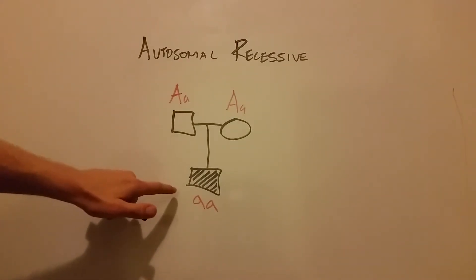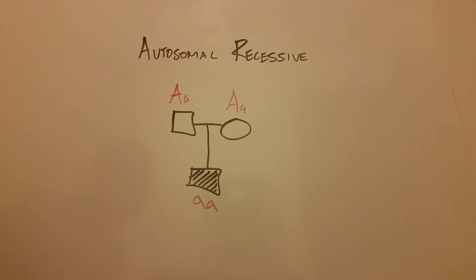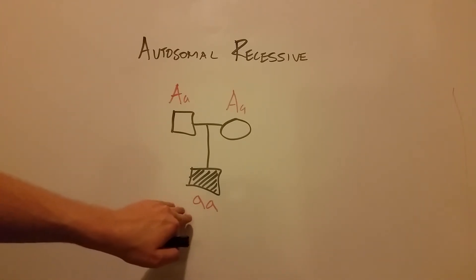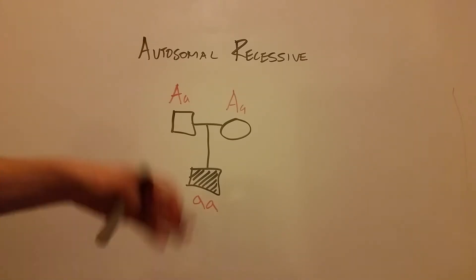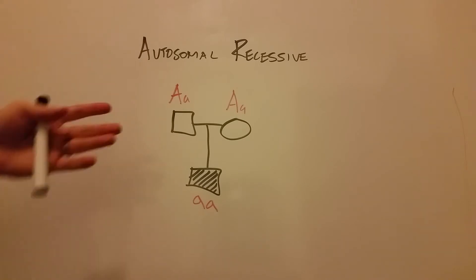And thus when they have a child—see our other video about Punnett squares—but with a basic two-by-two Punnett square, they have a one-in-four chance of having a child that will be homozygous recessive and thus manifesting cystic fibrosis or whatever the autosomal recessive disease is.